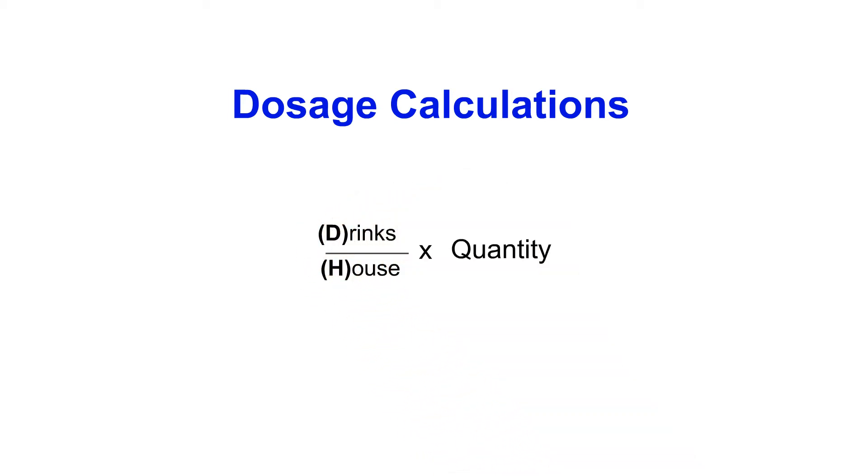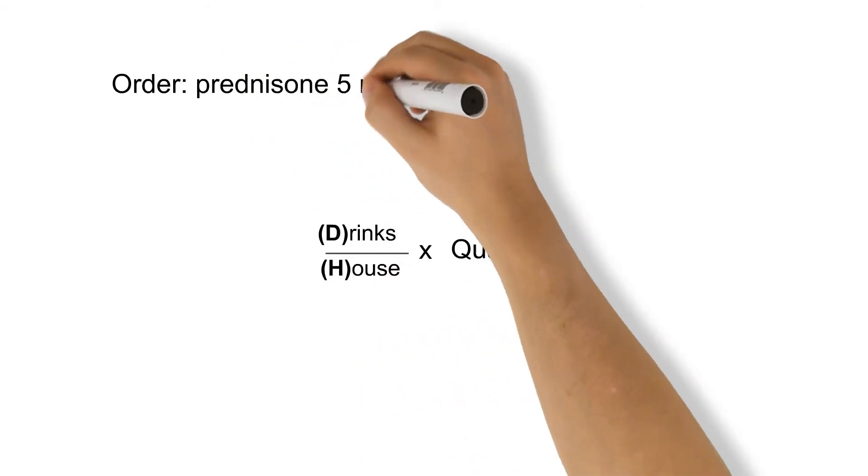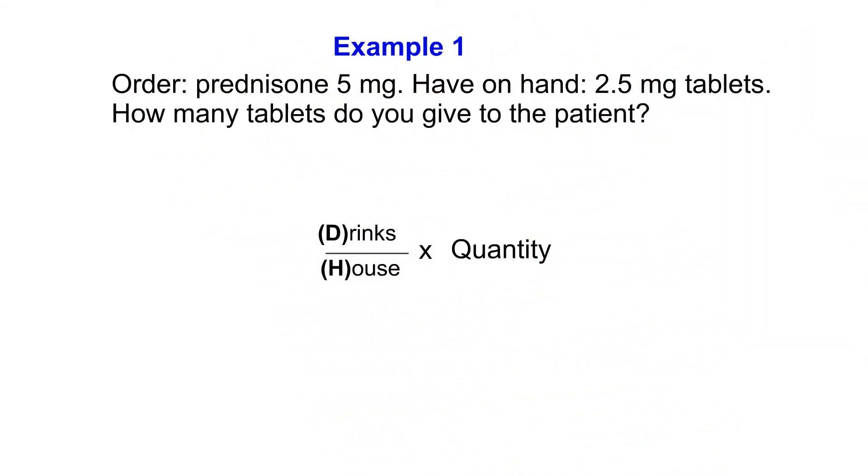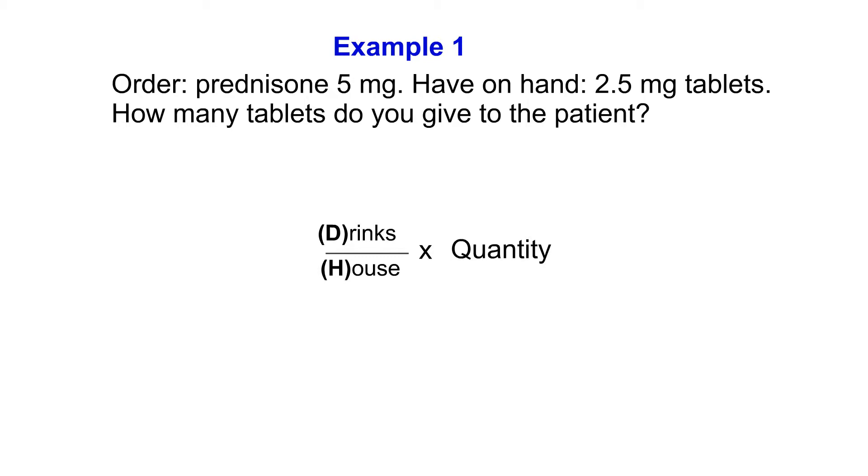So let's take a look at an example. Here we have an order of prednisone, 5 mg. What we have on hand is 2.5 mg tablets. How many tablets do you give to the patient? Since we know the formula, all we need to do is plug in numbers.